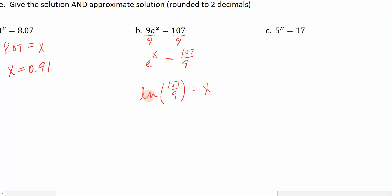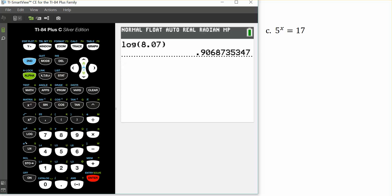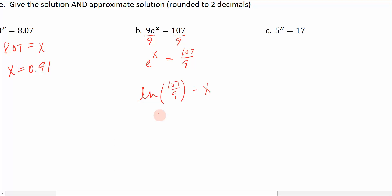Natural log is also another function I have on my calculator. We're going to put this into the calculator, which would be the natural log of 107 divided by 9. And we should get 2.48 when we round.